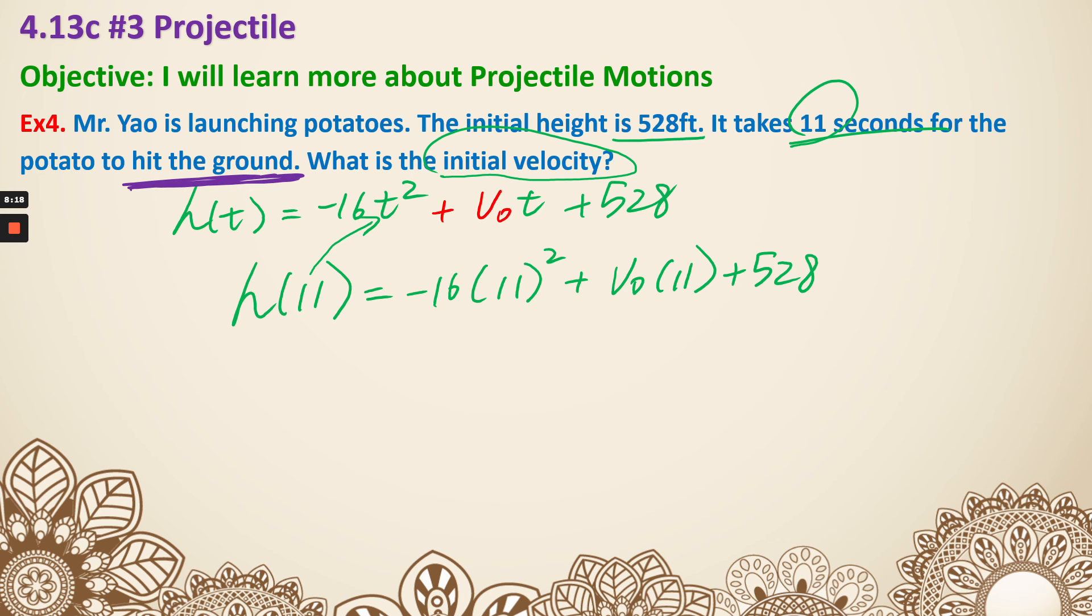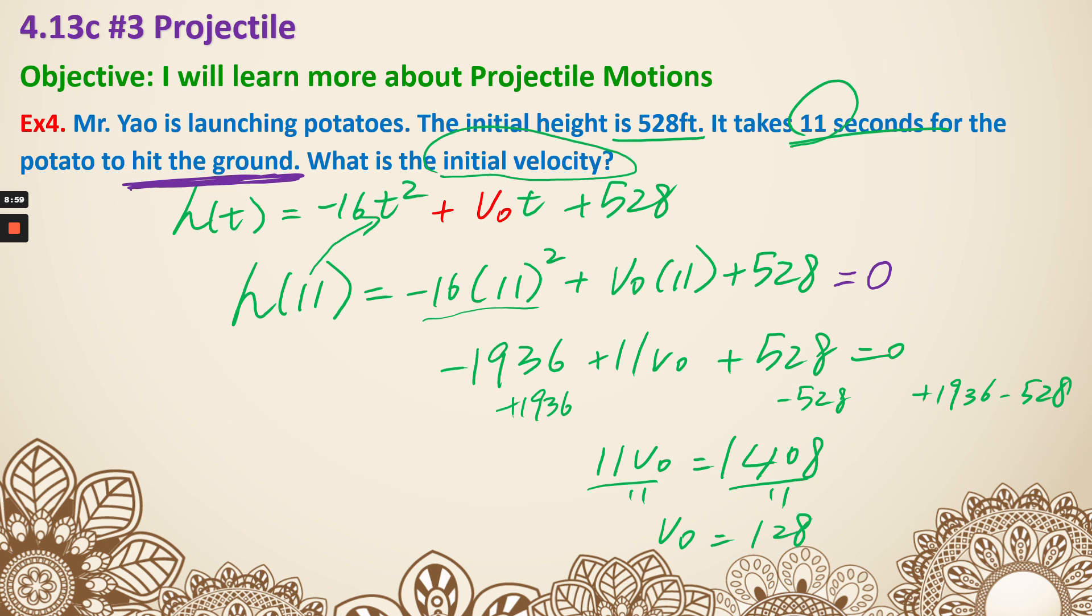The question said it takes 11 seconds to hit the ground. That also means to reach a height of 0. So set it equal to 0. Now let's calculate it out. This first part is going to be negative 1936, and then it's plus 11 v sub 0 plus 528 equals 0. Now you can see you are just solving a simple equation. So that means we can add the 1936, subtract 528 on both sides. We are going to get a positive 11 v sub 0 that equals to 1408. Divide both sides by 11. My v sub 0 is 128. Don't forget a unit. It is going to be feet per second. That is example 4.